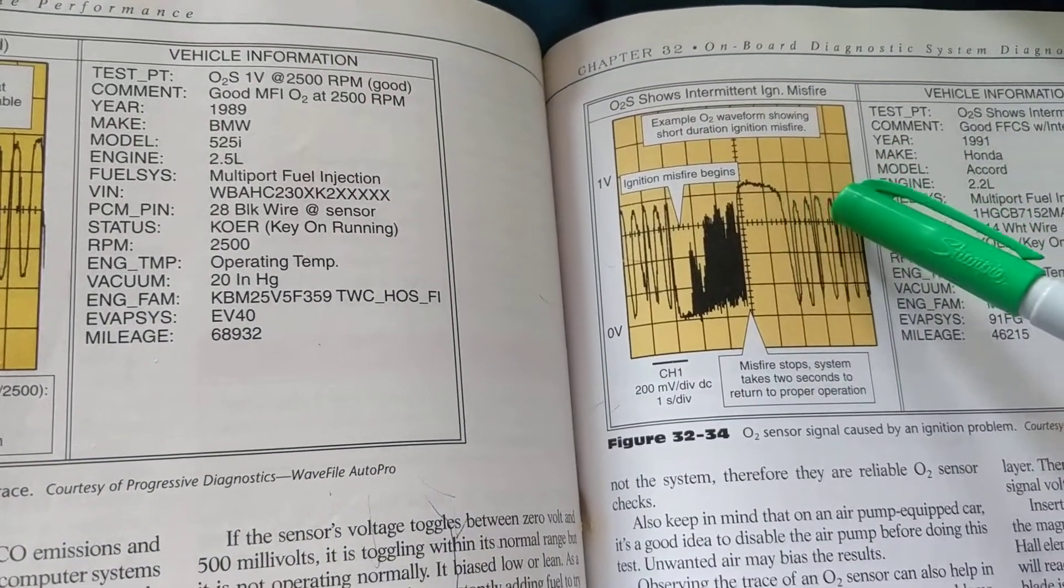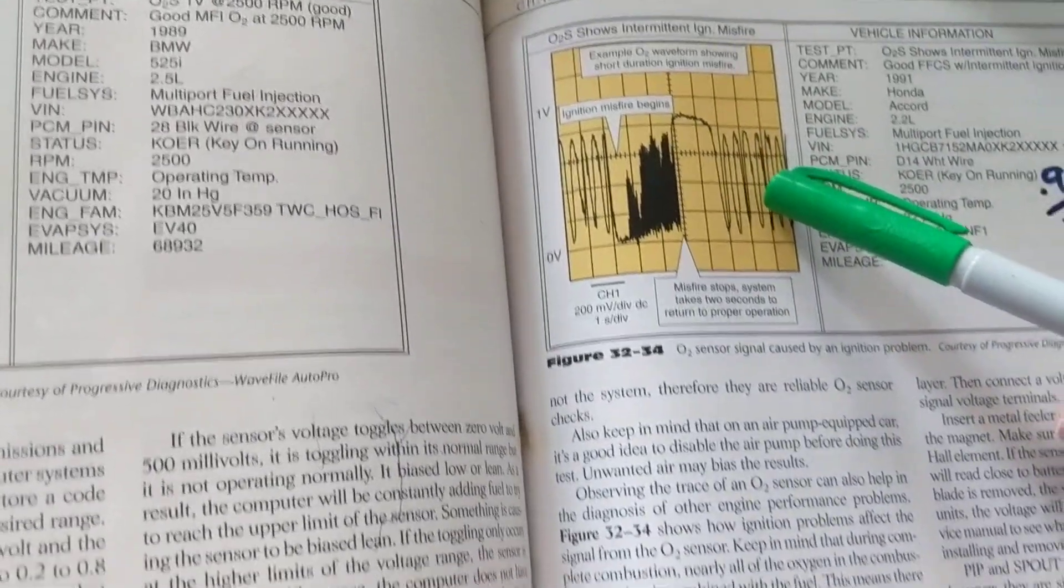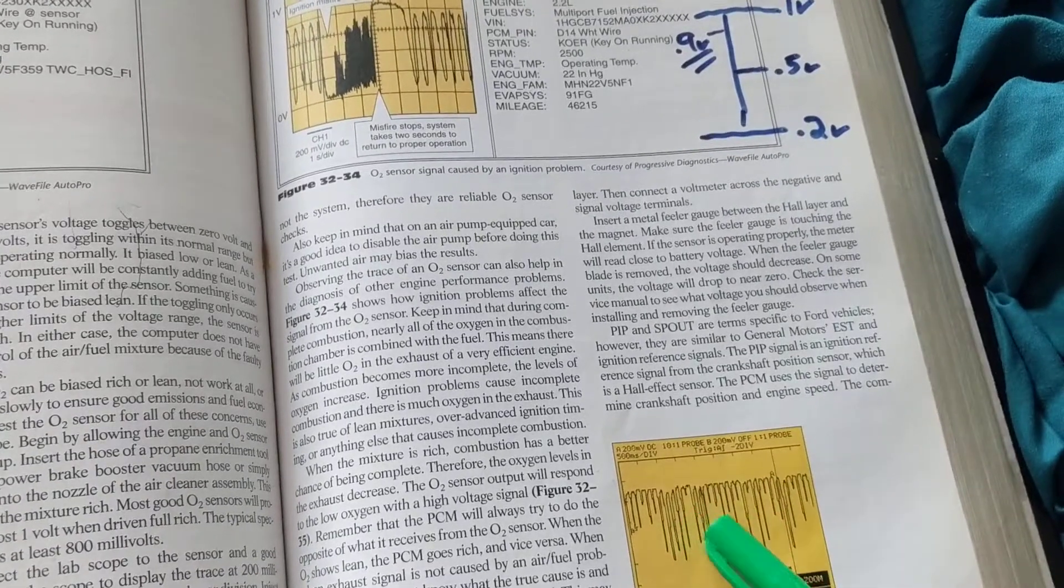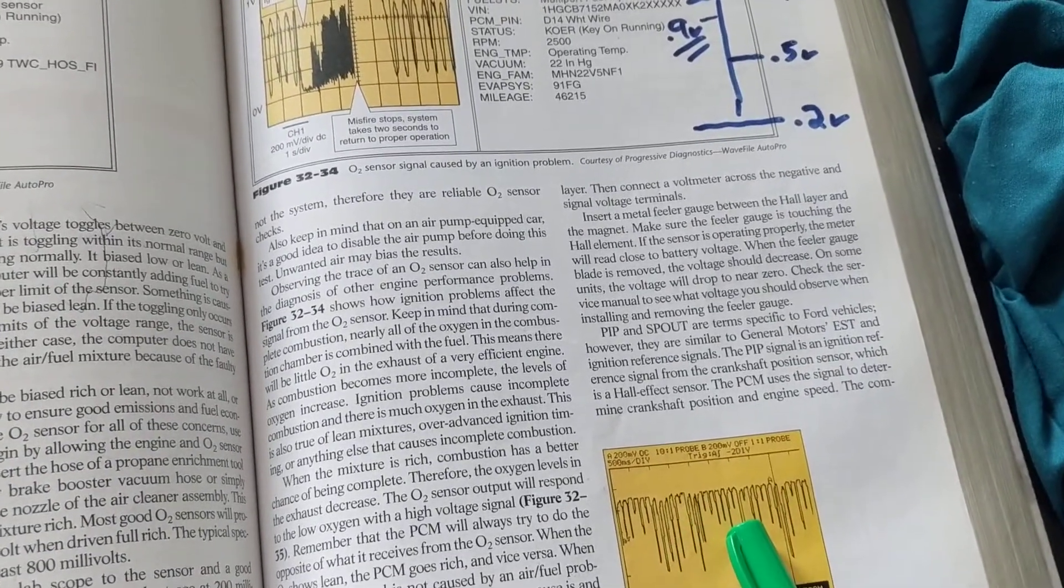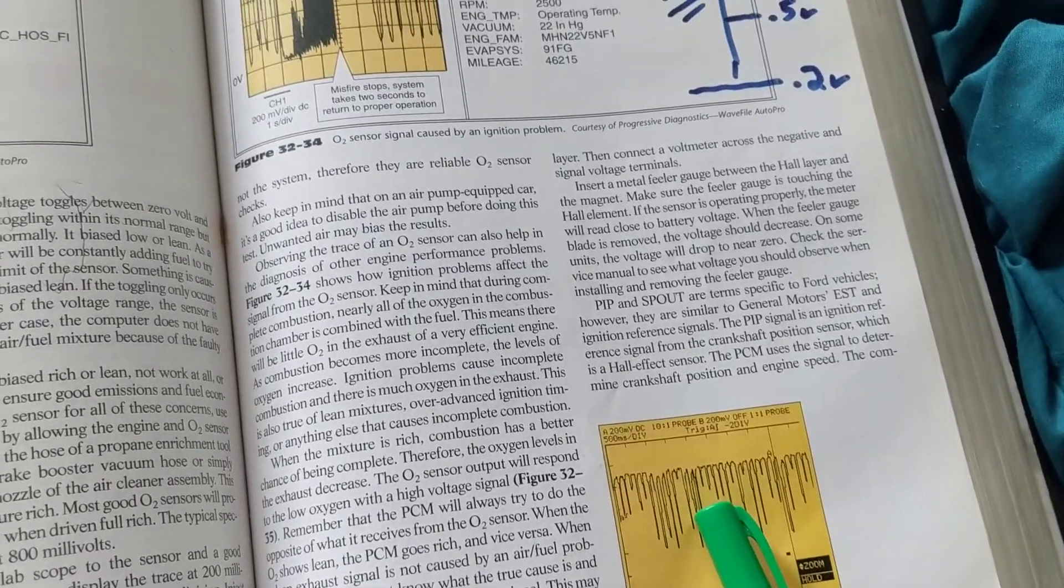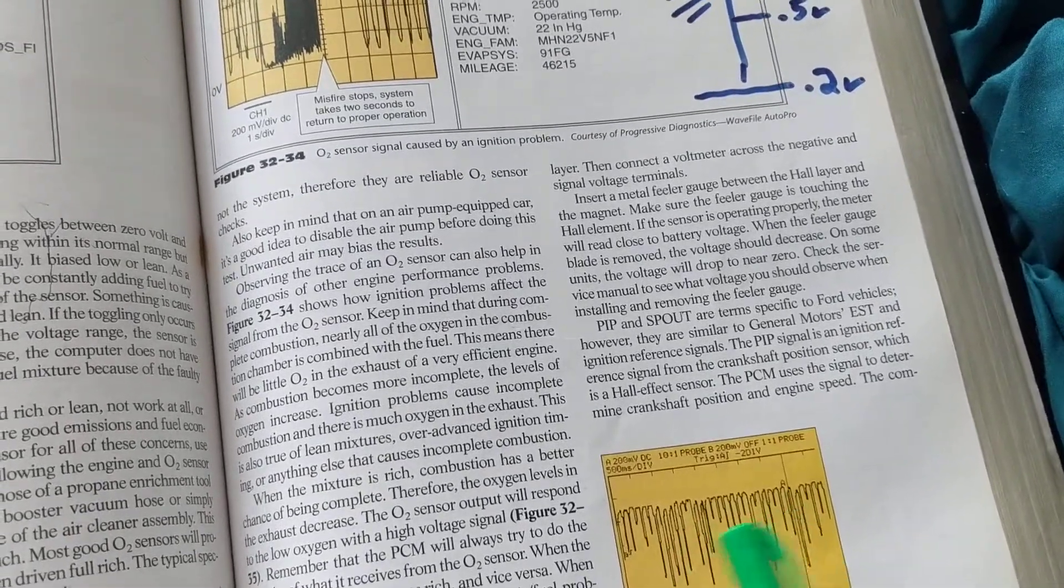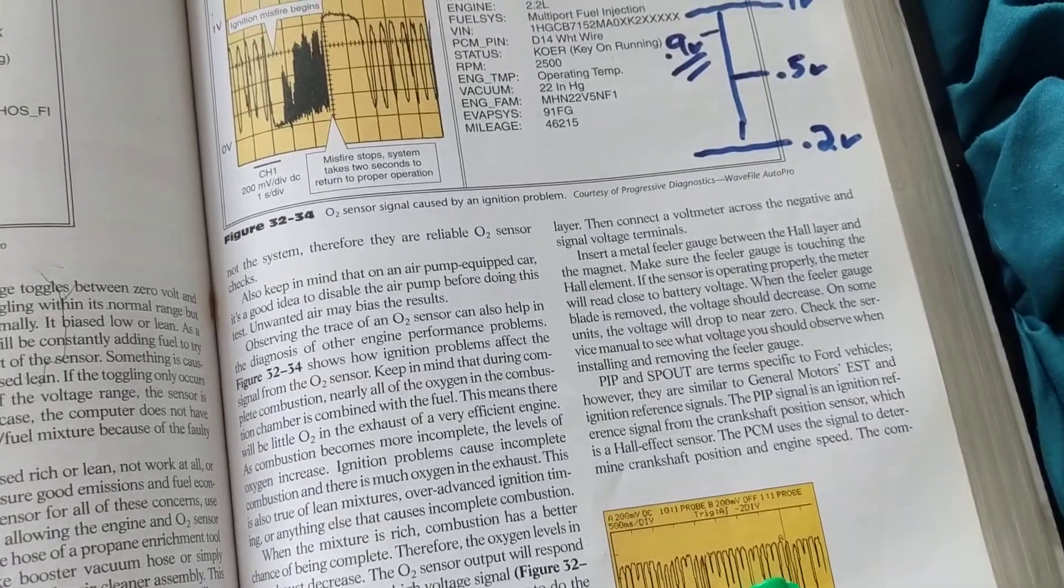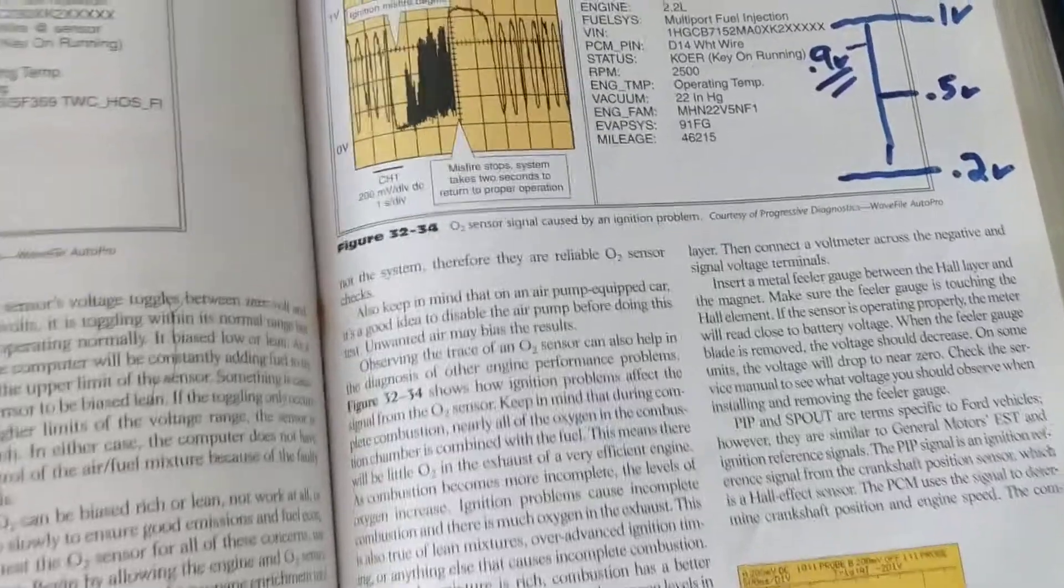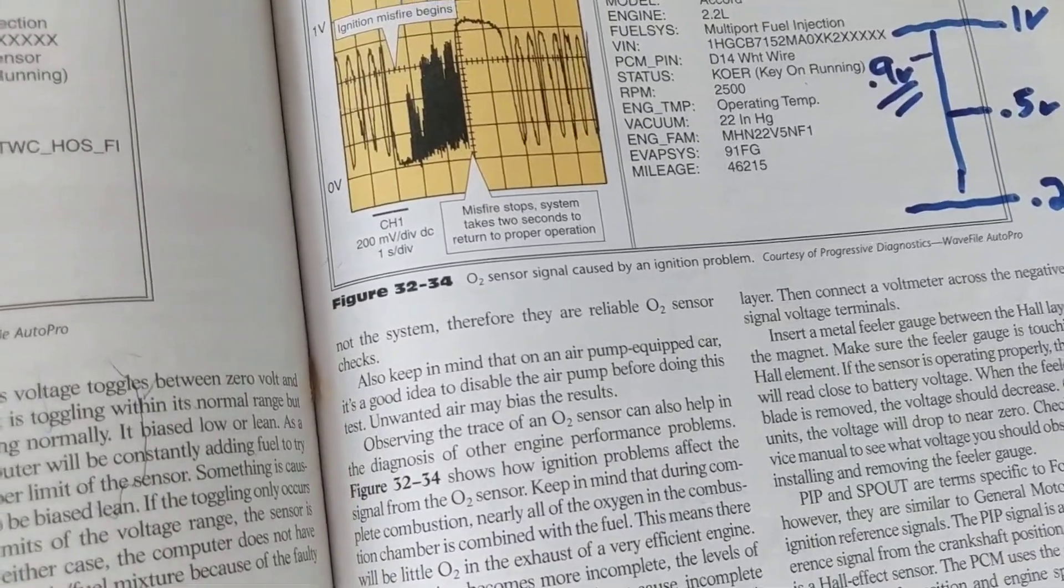Let's look at another one. You see, now all the peaks are all the way up high. This is a too rich condition, too rich over here. That's why everything is on the high side above the midpoint.